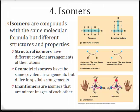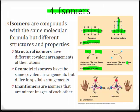The fourth and final property of carbon is its ability to form isomers. Isomers are compounds with the same molecular formula, but different structures and properties. Three important types of isomers include structural isomers, which have different arrangements of their atoms—in pentane the carbon atoms are in a straight line, while in 2-methylbutane they're arranged in a T-shape, but both molecules have five carbons. Geometric isomers have the same covalent arrangements but differ spatially. In a cis isomer, the extra atoms are on the same side of the carbon backbone, while in trans isomers they are on opposite sides.